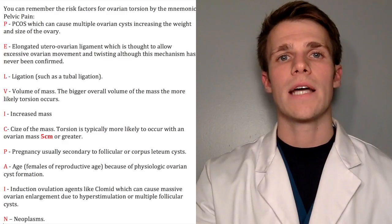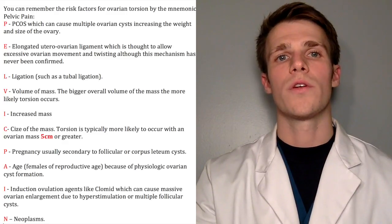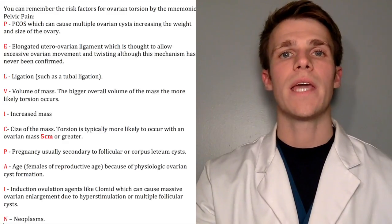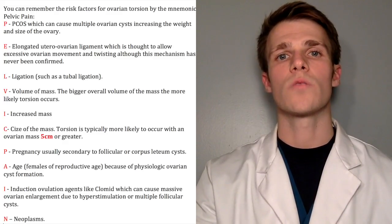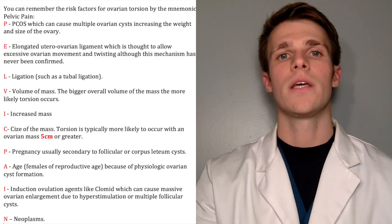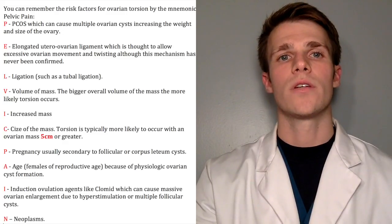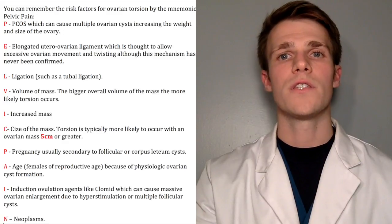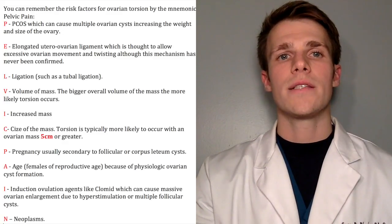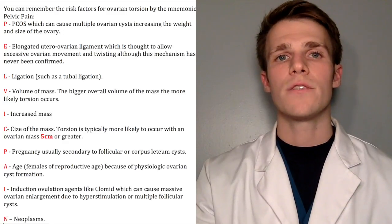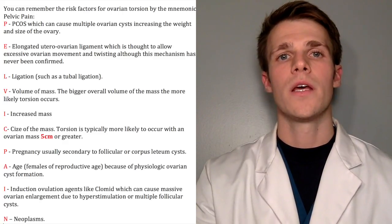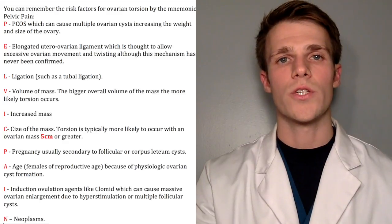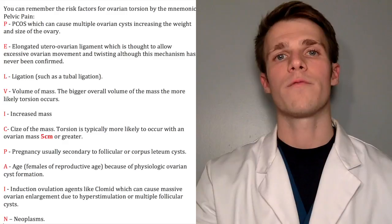C stands for size of the mass — torsion is more likely to occur with an ovarian mass 5 centimeters or greater, but it can occur with any size. P stands for pregnancy, usually secondary to a follicular or corpus luteum cyst that occurs with normal ovarian function during pregnancy. These will usually resolve on their own by the second trimester, but they do predispose the patient to torsion. A stands for age — females usually of reproductive age, because of the physiologic ovarian cyst formation that occurs. I stands for induction ovulation agents like Clomid, which can cause massive ovarian enlargement due to hyperstimulation or multiple follicular cysts. N stands for neoplasms — benign neoplasms are more likely to cause torsion because malignant masses tend to be more fixed in place.